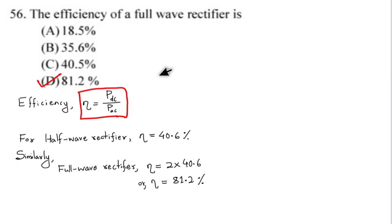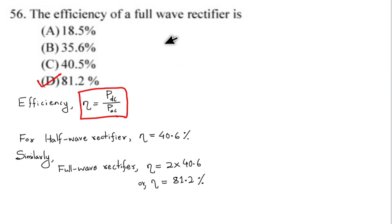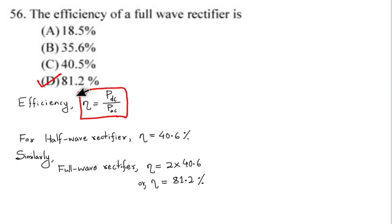Question number 56: Regarding rectifier efficiency — the output is DC power and input is AC power. Efficiency equals DC power divided by AC power. For a half wave rectifier, efficiency is 40.6 percent. For a full wave rectifier, efficiency is 2 times 40.6 percent, which equals 81.2 percent. Option number D is the correct answer. The efficiency of a full wave rectifier is 81.2 percent — this is a direct formula to remember.